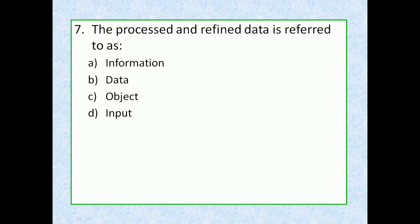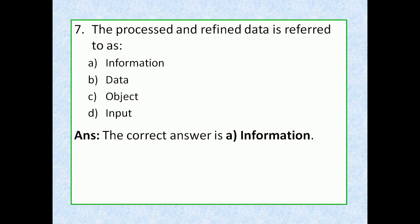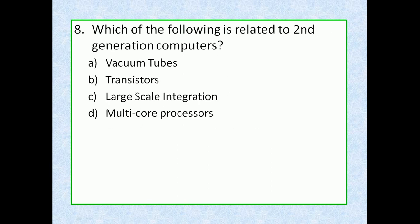Question 7: The processed and refined data is referred to as — option A: information, option B: data, option C: object, option D: input. The correct answer is option A, information. Data refers to raw, unorganized facts that need to be processed. When data is processed, organized, structured, or presented in a given context so as to make it useful, it is called information.